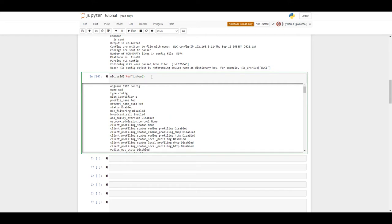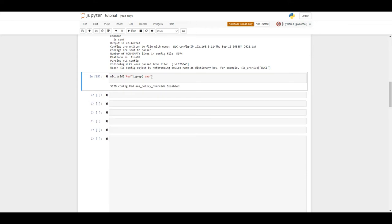But it is not so easy to observe manually. For this, we can search for the attributes which we are interested in by using grep function. For example, let's try to see if this SSID has AAA override parameter. We just add AAA in grep. Press Enter. And we see that AAA override for SSID red is in disabled state.